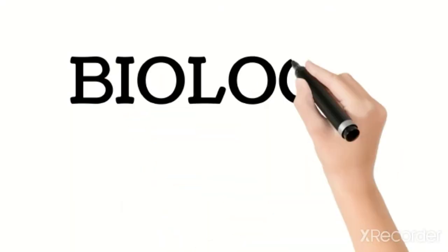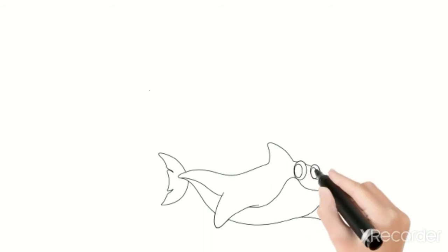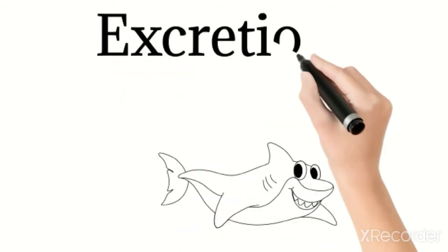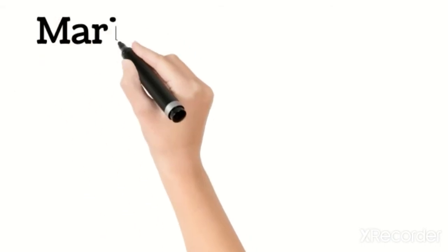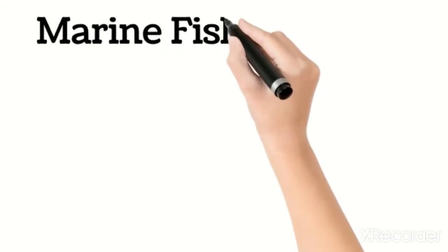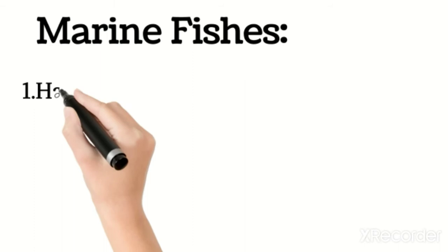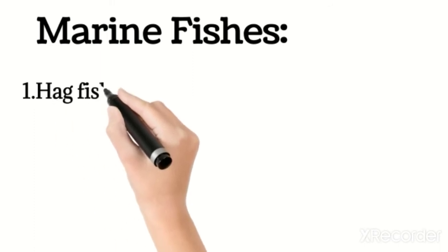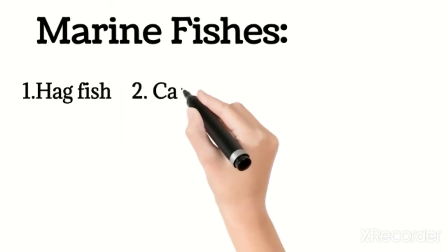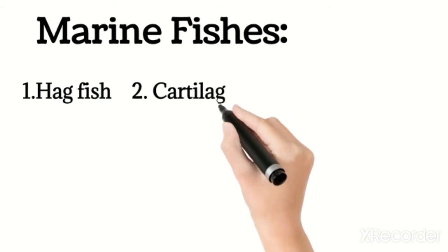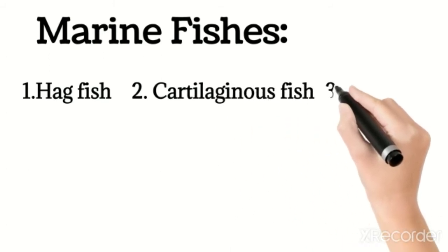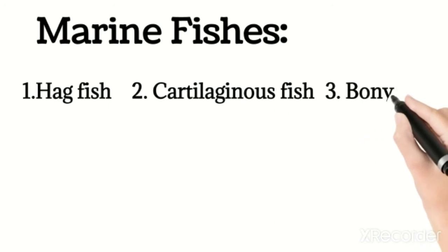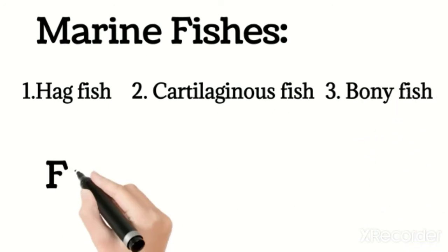Hi guys, today's topic is excretion in fishes, meaning the removal of waste material. There are two types of fishes: marine fishes, which live in salty seawater. Examples of marine fishes include hagfish, cartilaginous fishes, and bony fishes.